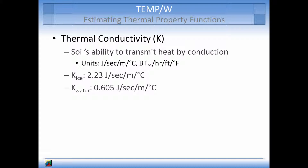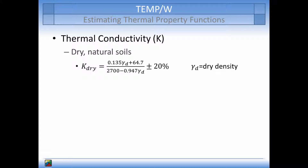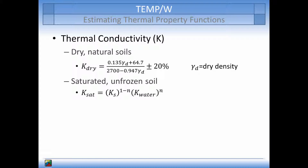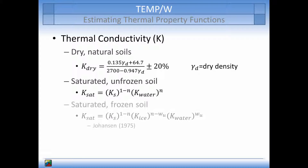To estimate the thermal conductivity of a dry natural soil, the dry density of the soil can be used, assumed to be in kilograms per cubic meter. You can also estimate the saturated unfrozen bulk thermal conductivity by using the porosity and the thermal conductivity of the soil minerals and water. The saturated frozen bulk thermal conductivity can also be estimated using the porosity, unfrozen water content, and the thermal conductivities of the soil minerals, water, and ice. These calculations are based on the literature by Johansson, 1975.